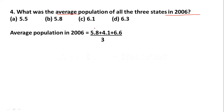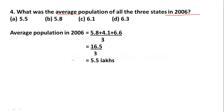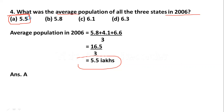Average population in 2006 = (State A: 5.8 + State B: 4.1 + State C: 6.6) / 3 = 16.5 / 3 = 5.5 lakhs. Option A: 5.5 is the average population of all 3 states in 2006. Option A is the correct answer.